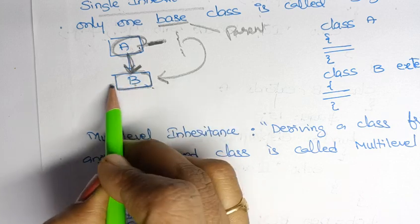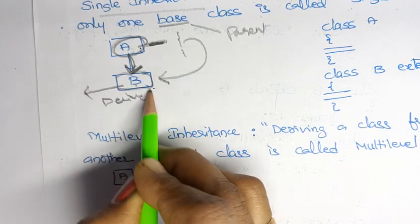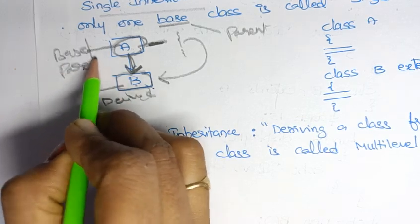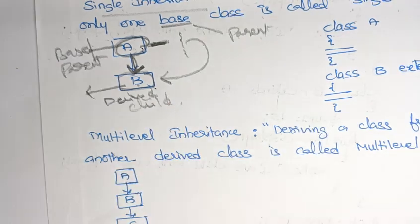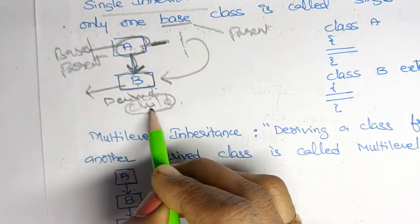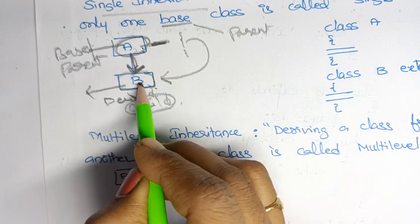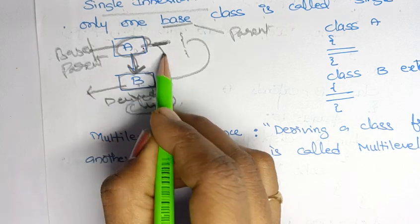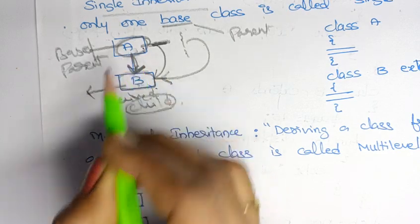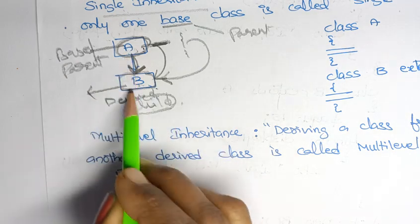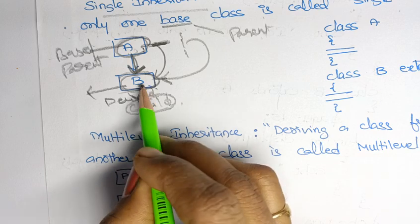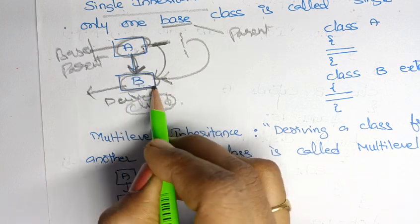By seeing this diagram you can come to know that B is a derived class and A is a base class — simply remember A as parent and B as child. The child has only one parent, so that is single inheritance. B is getting the properties of A — whatever variables and methods are used in class A, those are accessible in B. The child always gets the properties of the parent.